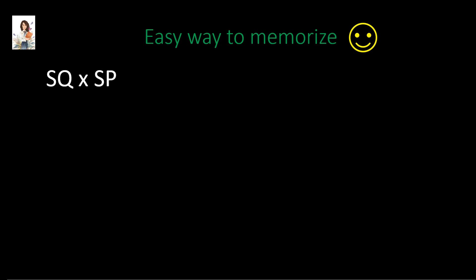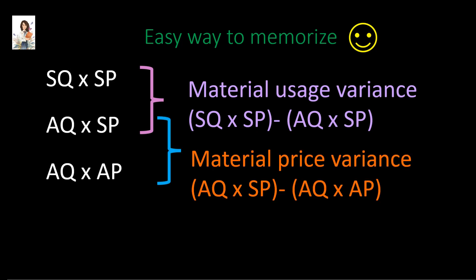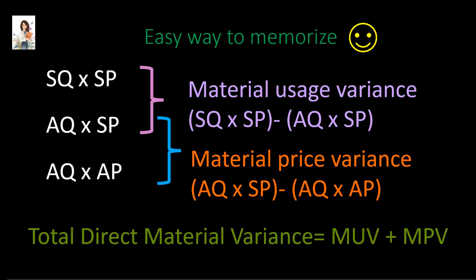If you find the formulas a little confusing, here is an easy way to memorize them. First, write standard quantity into standard price. Then change the first term and write actual quantity into standard price. Then change the second term and write actual quantity into actual price. The difference between the first two lines of this grid is the material usage variance, and the difference between the last two lines is the material price variance. The total direct material variance is the addition of the material usage variance and the material price variance.